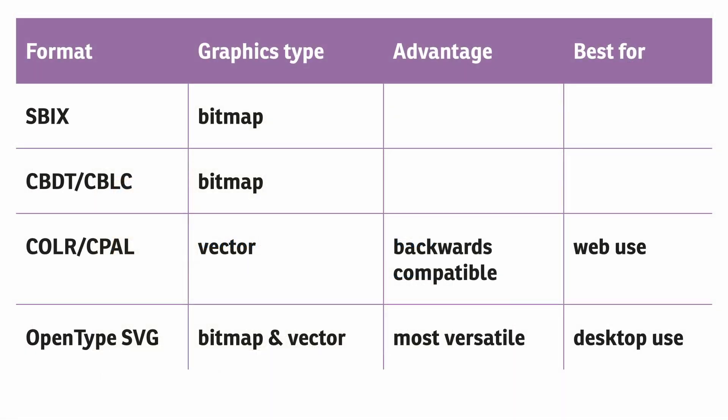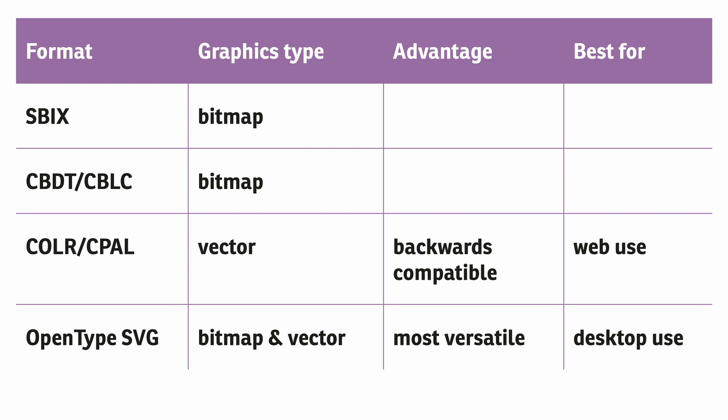To sum up, here are the main differences among the four color font formats presented as a table. At the moment, Color CPAL fonts are the best choice for web use and OpenType SVG fonts work well in desktop design applications. And that's it for this episode.